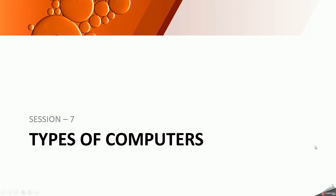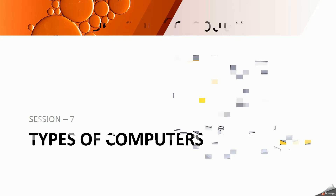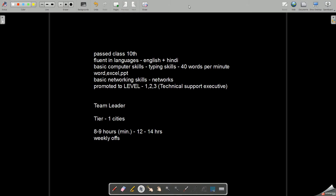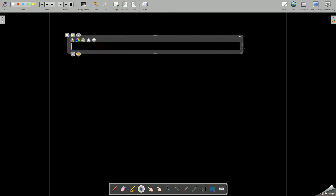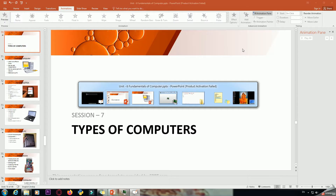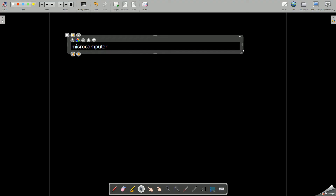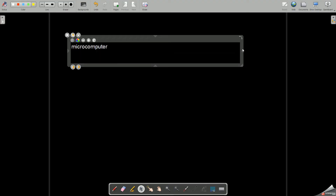Good morning students. In today's class we are going to discuss Session 7, that is types of computers. The very first type of computer is the desktop computer, also known as the micro computer, which performs all sorts of tasks. It is used in a home or office and can be used independently or as part of a network.